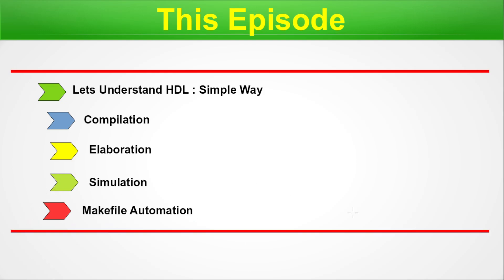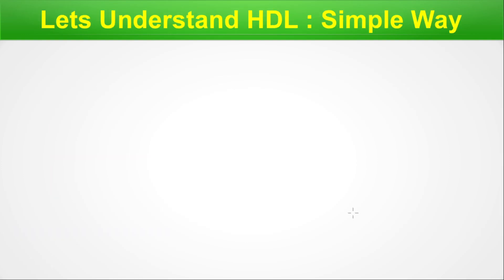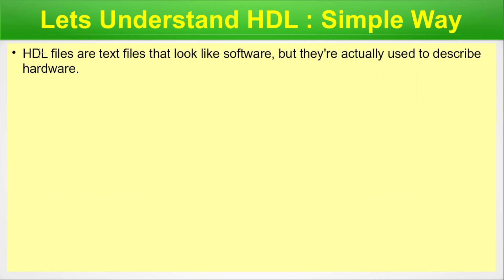Let's begin and understand HDL in a very simple way. HDL files — whether you are coding in Verilog, VHDL, or SystemVerilog — are text files that look like software but are actually used to describe hardware. The similarity with C programming is that C defines software operations, but HDL is for hardware operations.